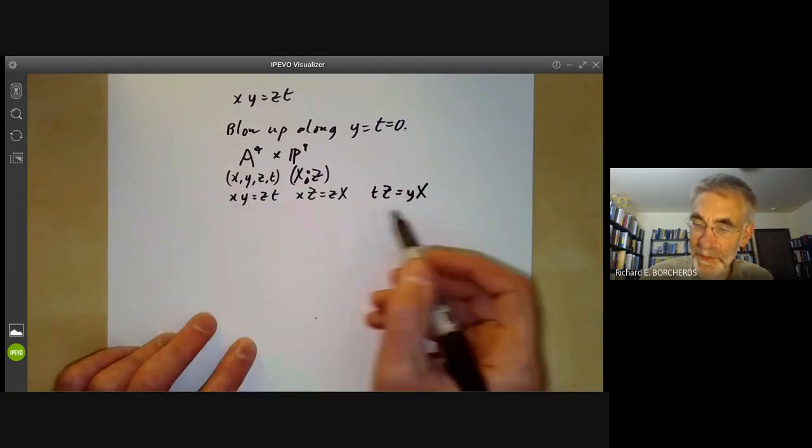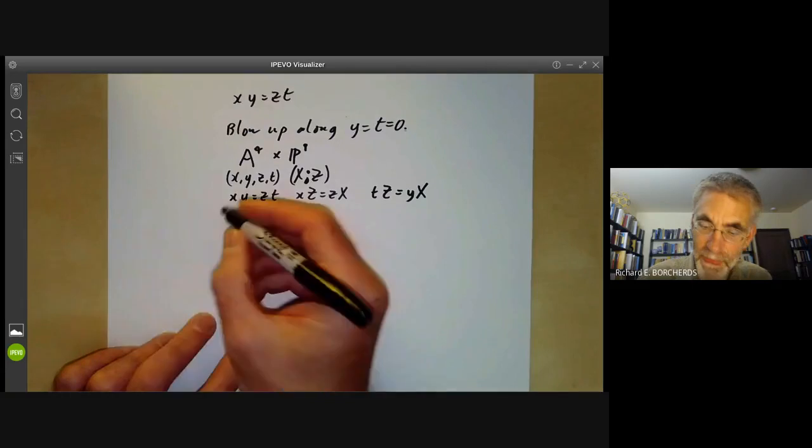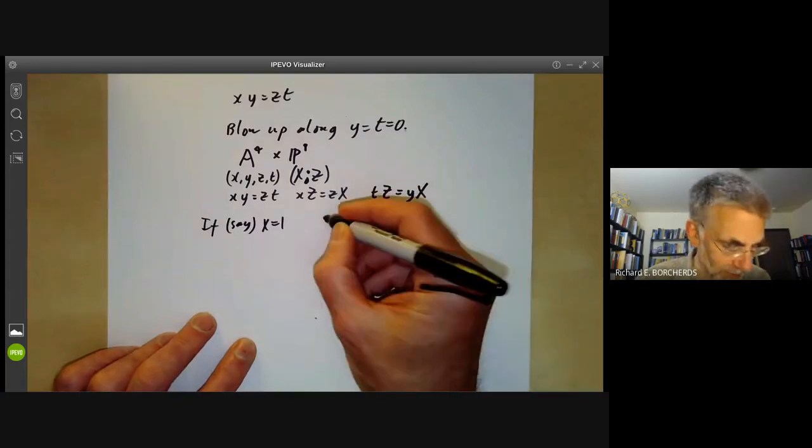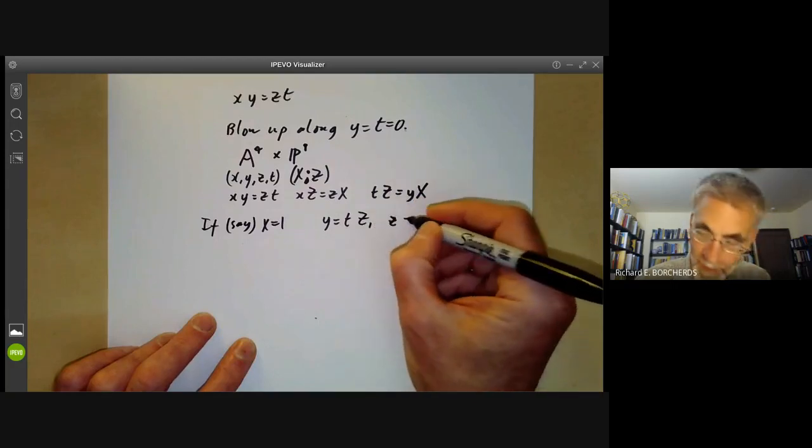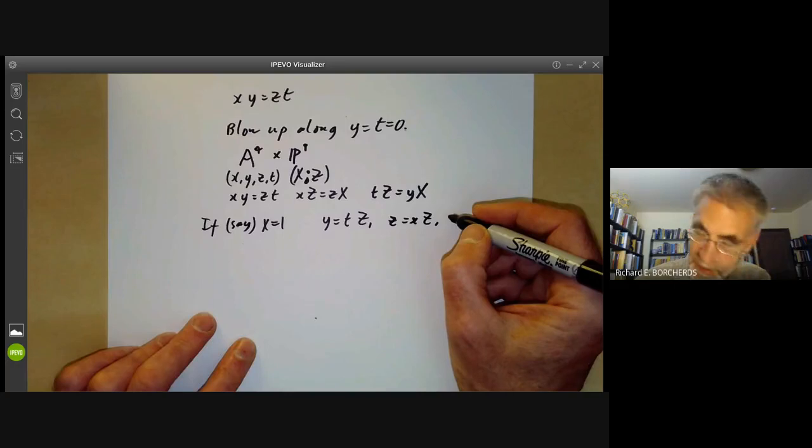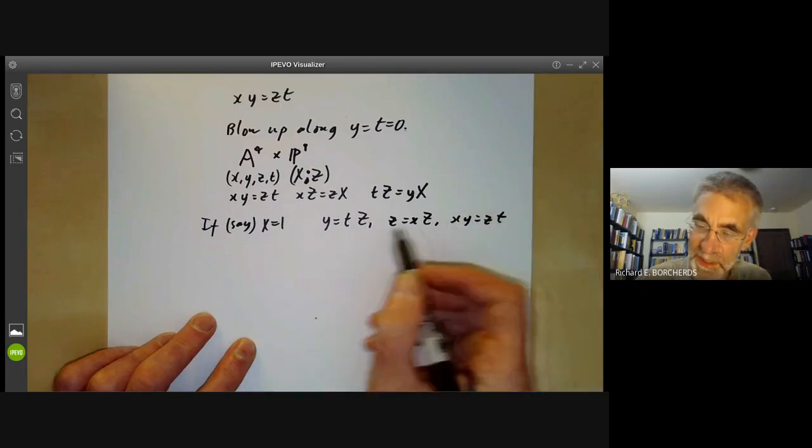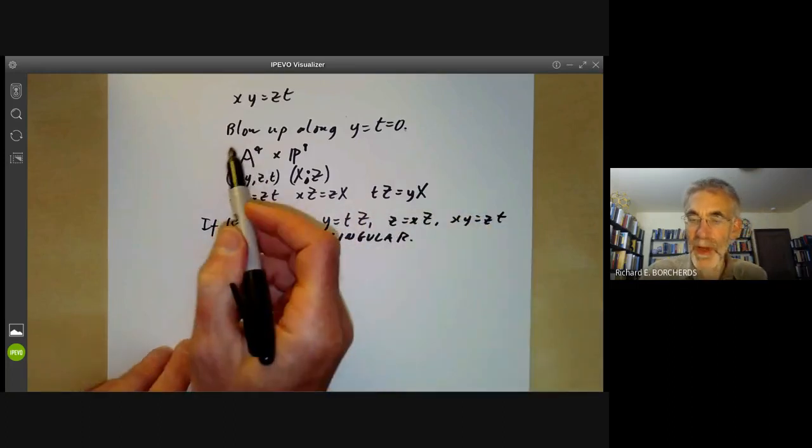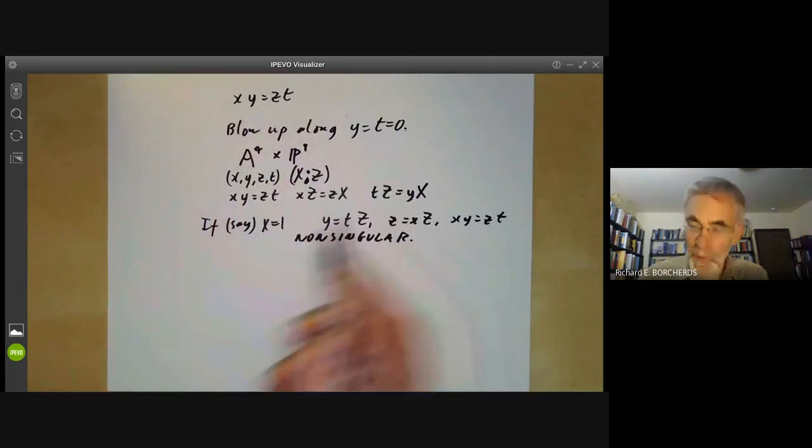If we take X = 1 as one of the coordinate patches, this becomes y = tz, and z = xZ, and xy = zt, which reduces to affine three-space, so it's non-singular. So if we blow up this hypersurface along this line, we again get a non-singular variety.